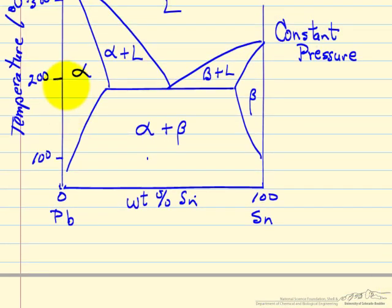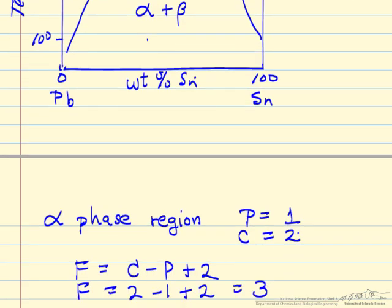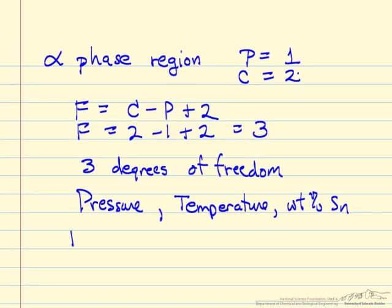So those would be the 3 independent variables. If we pick 200 degrees, we still have a range of concentrations that are possible in the alpha phase. If we pick this point at 200 degrees, then we've specified a concentration, pressure, and a temperature. Those are 3 degrees of freedom. All intensive variables are now specified.